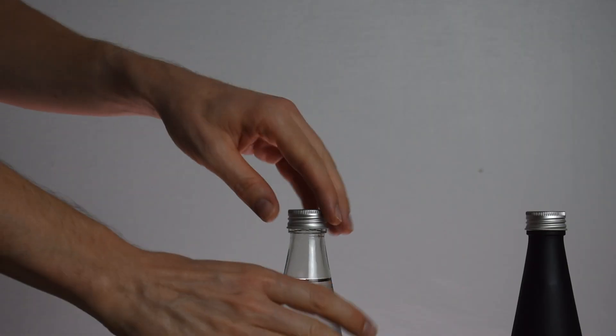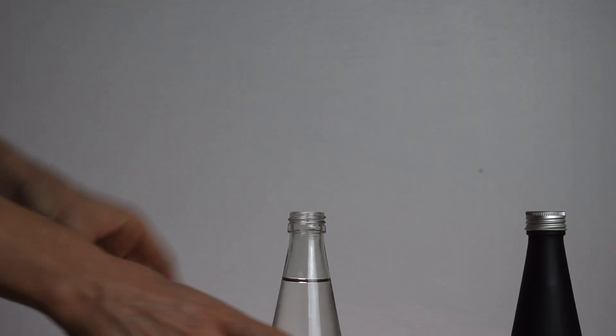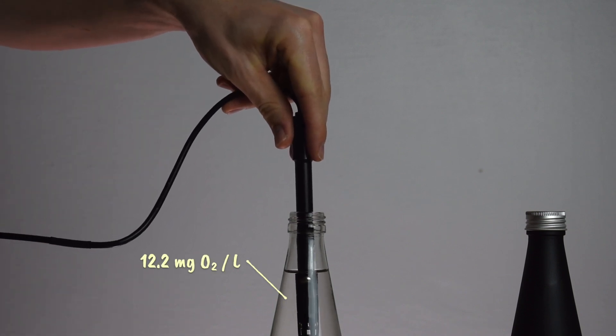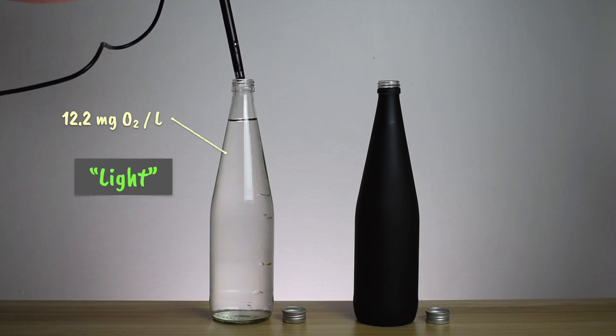After the time has passed, open the first bottle and record the new dissolved oxygen level. Here, we've got 12.2 milligrams of oxygen per litre. We'll call this value light, since it's from the bottle exposed to sunlight.